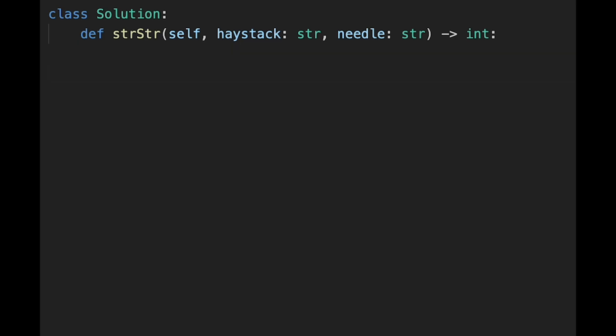First, if length of haystack is less than length of needle, we should return -1 immediately. If not, let's iterate through all characters one by one.